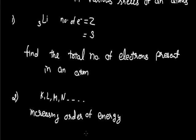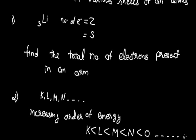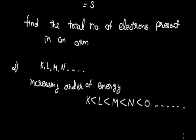The increasing order of energy for the shells is: K shell has the least energy since it is the nearest shell to the nucleus. L shell has greater energy than K shell, M shell has greater energy than L shell, then comes N shell, then O shell, and so on in increasing order. Since electrons fill in increasing order of energy, they first go to K shell, then L shell, and so on.